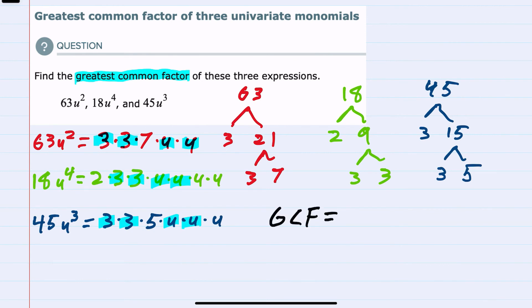So our greatest common factor would be both of those 3's that they each have in common and both of the u's that they each have in common, or 9u². And another way to think of this is if we look back at the three expressions, 9 is the largest number that will divide evenly into each one of the numbers, and u² is the most number of u's that each one of them would have.